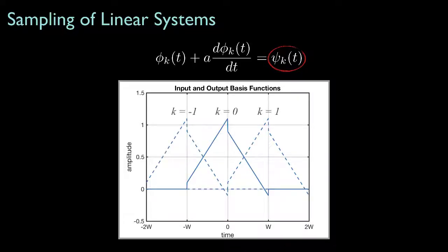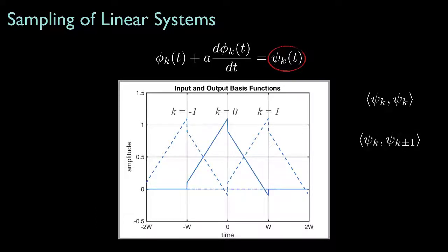If we add those two components together, we get the shape for the fundamental basis function for the output. Here's what those functions would look like for sampling indices minus 1, 0, and 1. Like the input triangle bases, these functions aren't all orthogonal, but that's only for adjacent pairs. So the only inner products needed for sampling are the self-inner products and the inner products for the nearest neighbors in each direction.